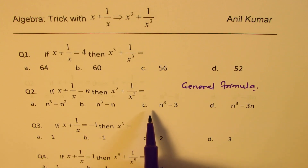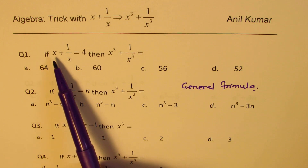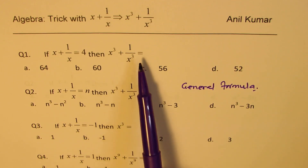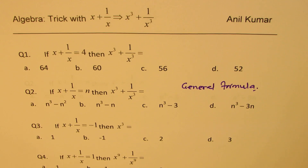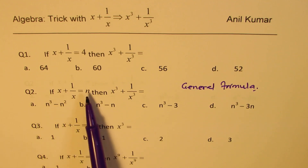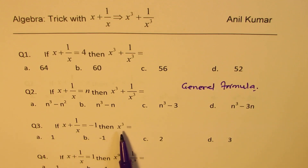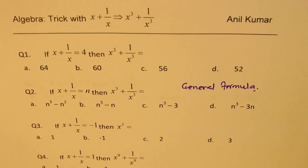We can apply this general formula to find the value when the sum of a number and its reciprocal is any number. So that is the trick — once you know this formula, you can get the solution in a few seconds. Question number three: if x plus 1 over x is minus 1, a special case when n is minus 1, then what is x cube? And once you understand this, any question related to powers of cubes can be very easily solved. Let's look into how to solve and learn the tricks about solving such things within a few seconds.